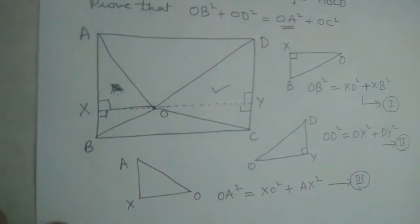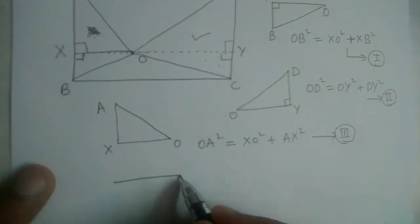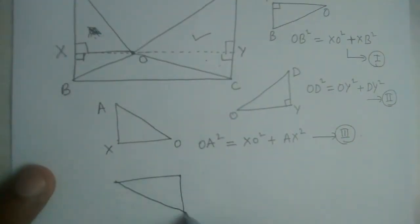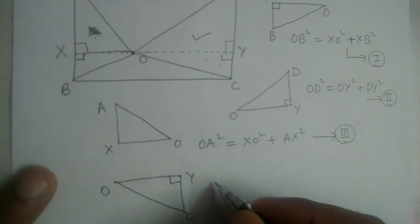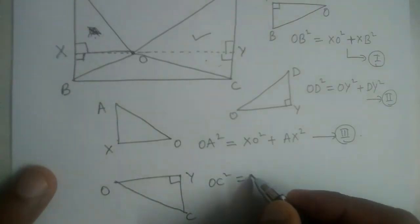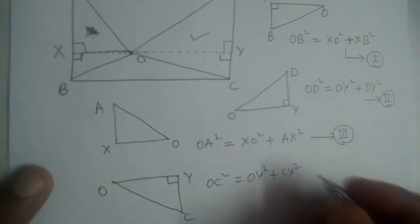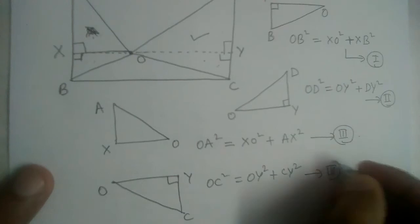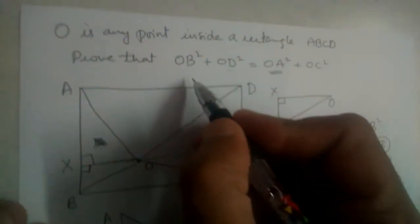Now we are left with the last right angle triangle. Let us apply Pythagorean theorem to that triangle also. This angle is 90 degrees, so OC² = OY² + CY². Let this be equation four. We now have four equations.